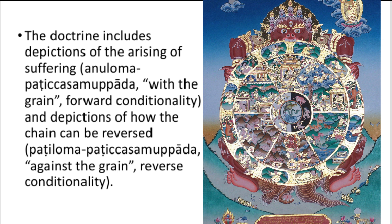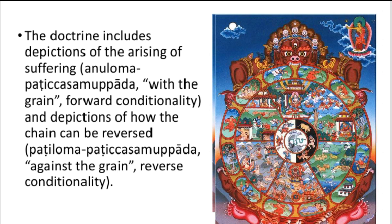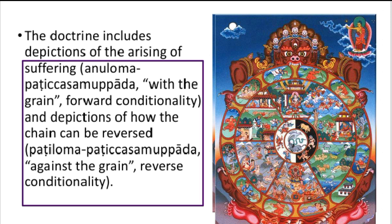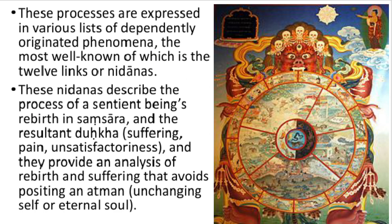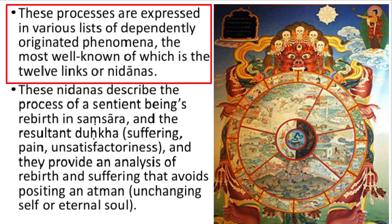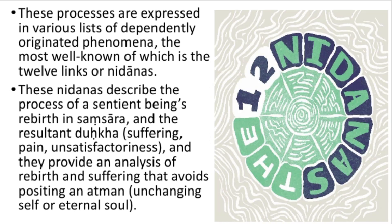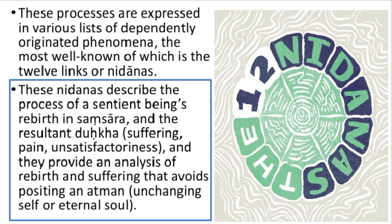Anuloma Pratītyasamutpāda means future rebirth — going forward in the conditionally dependent process. Pratiloma means past rebirth — going in reverse, against the grain of the conditional process. Both processes describe dependent origination, and are also known as the 12 links — dvādaśa nidānas — which describe the process by which we perceive the concept of rebirth within the material world, due to which pain and suffering arise.